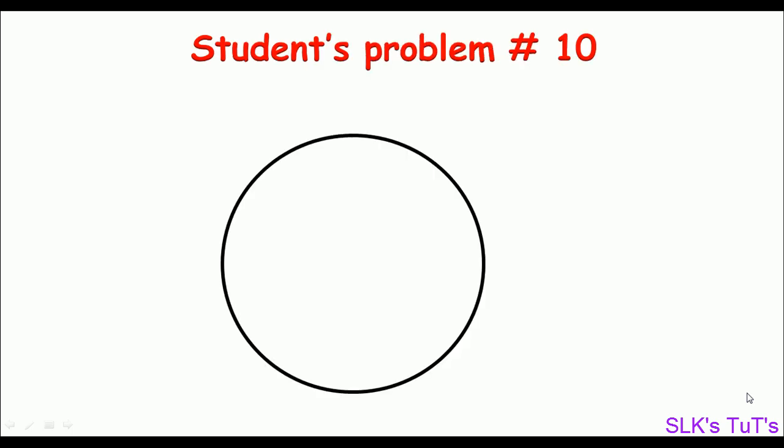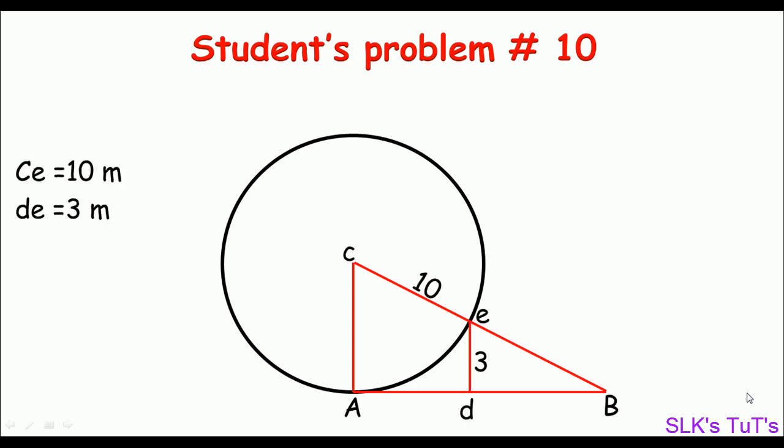Assalamu alaikum dears, myself Silke. A circle and a triangle is given in this problem. We are asked: if CE is 10 meters and DE is 3 meters, then what should be AB? Can you figure out the solution to this problem? Give it a try, and when you are done, keep watching and see what's happening.